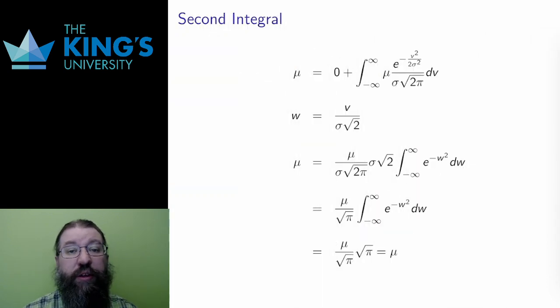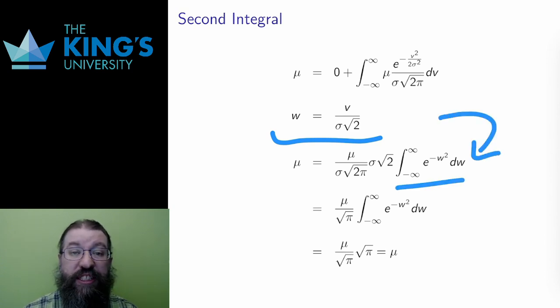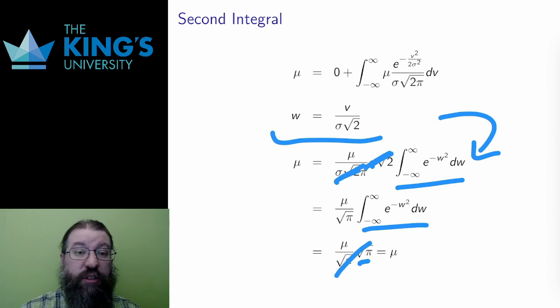The second integral needs another substitution. w equals v over (sigma times root 2). After that substitution, the details of which I've not shown all of the steps, I get the integral of e^(-w^2). As I said in the last video, this integral has the value of the square root of pi. And this square root of pi will cancel out, and all the other constants will have canceled out by this point. So the result is in fact exactly the value mu.